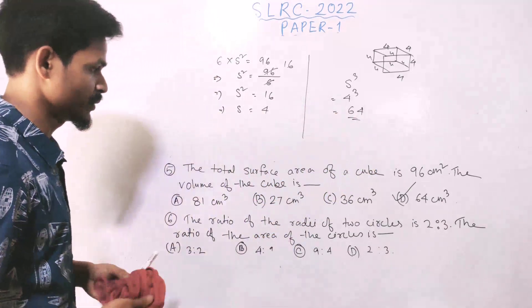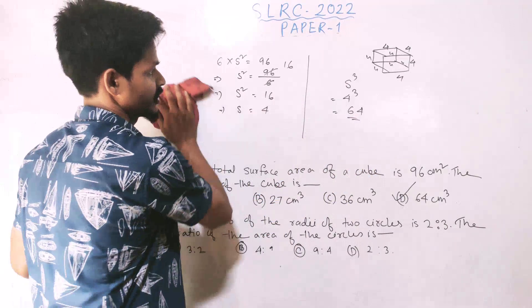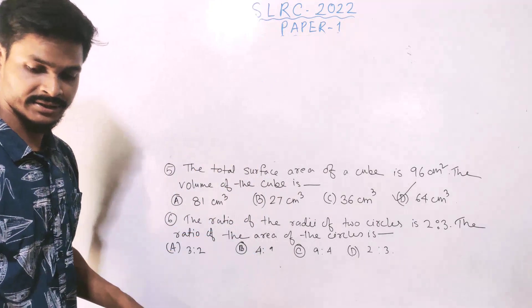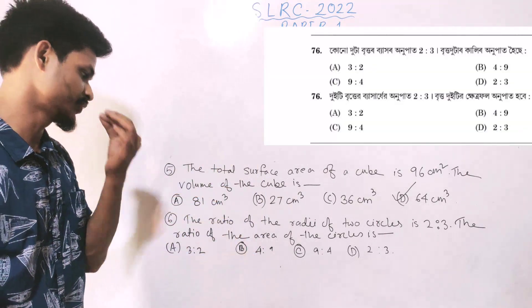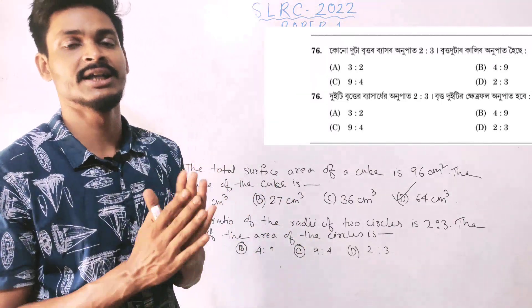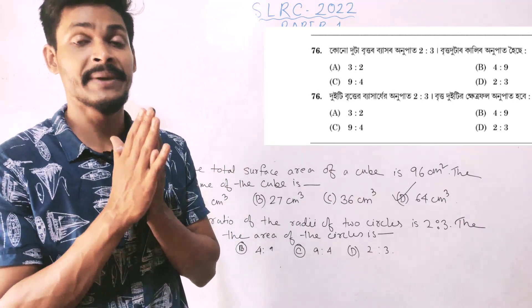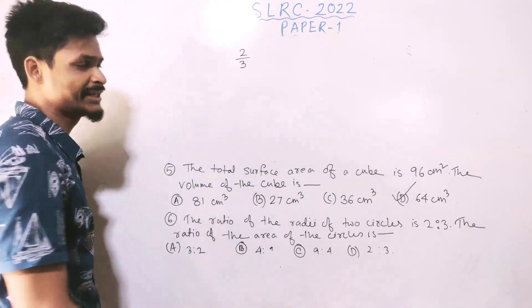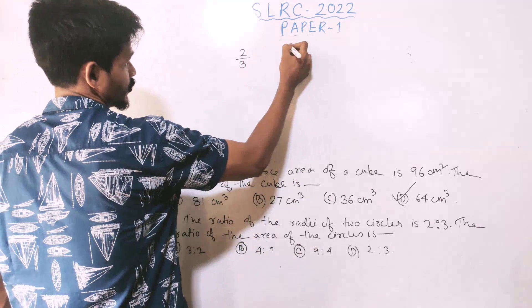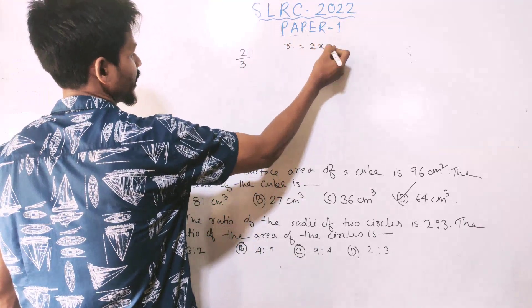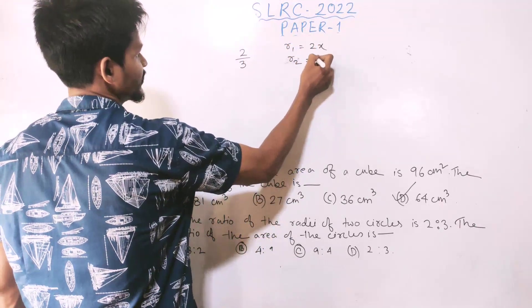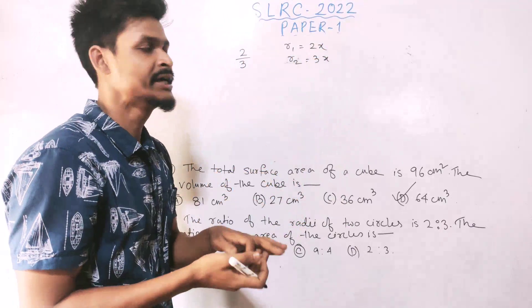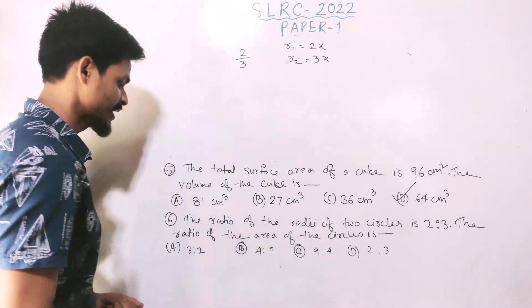Question 6: The ratio of the radii of two circles is 2 is to 3. Let the radii be r1 equals 2x and r2 equals 3x, using common ratio x.